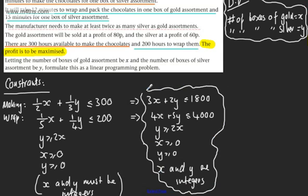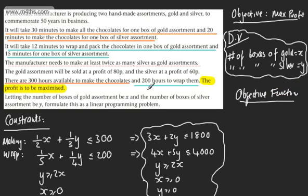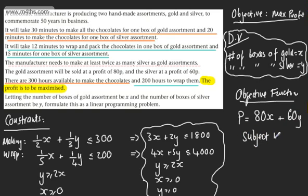Here are our constraints. Now we're going to look at the objective function. The objective was to maximise profit. The objective function can be found in the text: gold assortments sold at a profit of 80p and silver at 60p. So profit P is equal to 80x plus 60y.